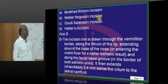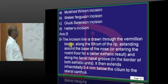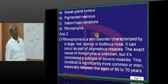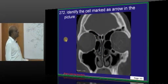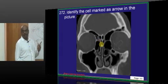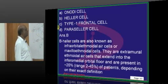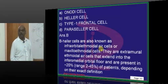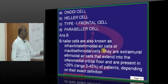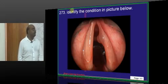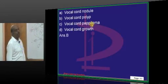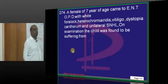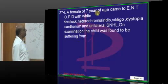And this is the old question we discussed—it's a Weber-Ferguson incision that is done along the vermilion. Now what is this? Classically it is rhinophyma. Now what is the cell which is being marked by the arrow in the picture? It is called a Haller cell. A Haller cell is also called infraorbital ethmoidal air cell or a maxilloethmoidal cell. Now what is this condition? It is a vocal cord polyp.